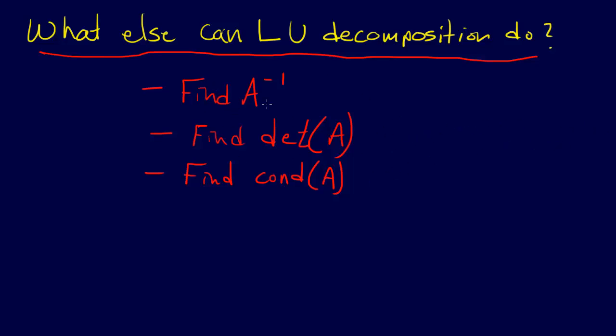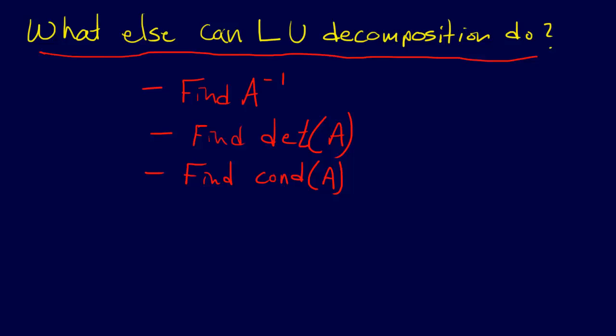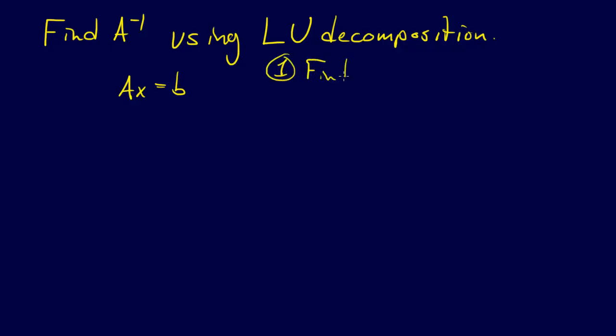The first thing then that I'm going to go over is how to find A inverse with the LU decomposition. How does the LU decomposition help us find A inverse? So find A inverse using LU decomposition. Okay, and so one of the things that we need to do is we need to realize that if we know we're solving this equation AX equals B, and if we're solving it a lot of times, like for a lot of different Bs, then LU decomposition is really good because remember there was step one, find LU.